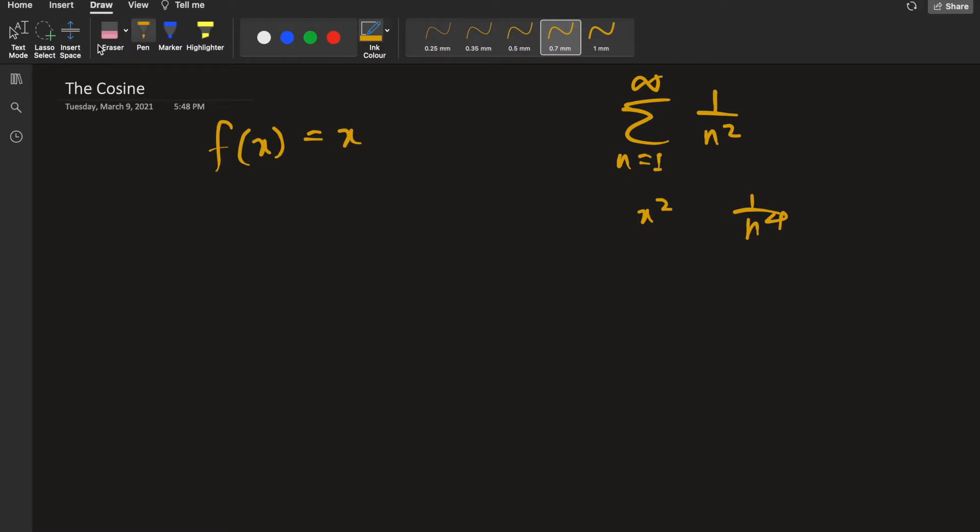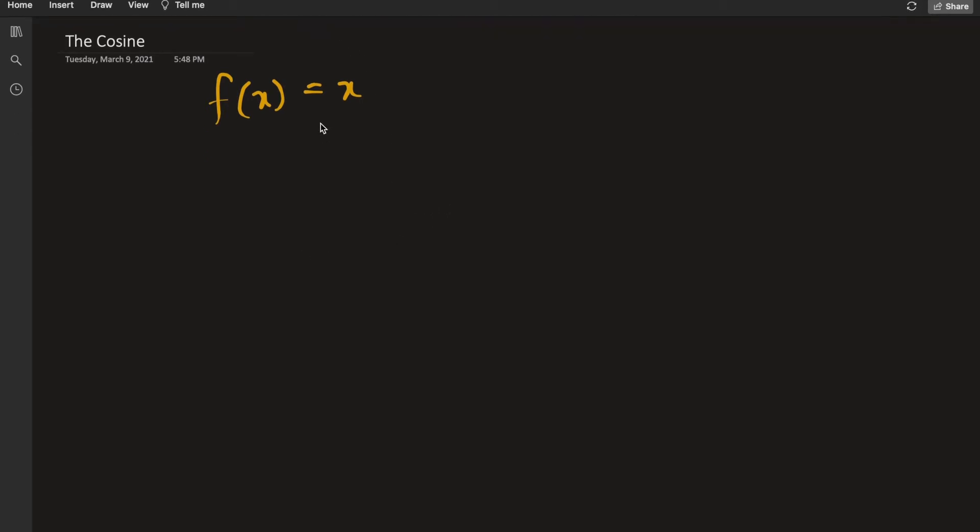That's the basic idea that I'm going to employ. I'm going to consider the Fourier series about negative π to π.